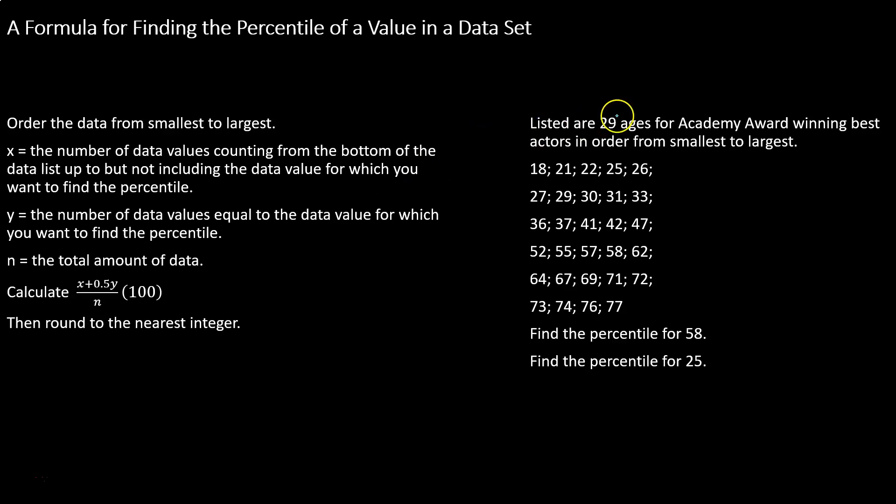So we're looking at the 29 ages for Academy Award winning Best Actors, again ordered from smallest to largest for us. We know there's 29 ages so the number of data values in our data set is 29, n is 29. X is the number of data values counting from the bottom of the data list but not including the data value that we're investigating.